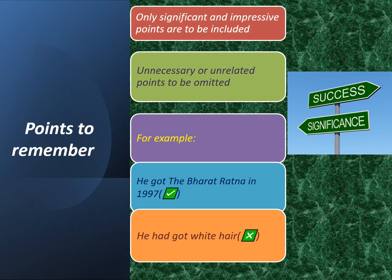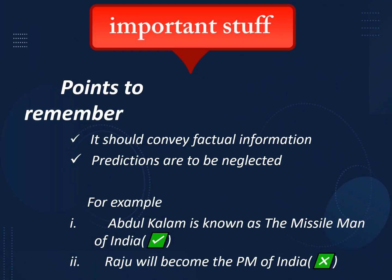For example, 'He got the Bharat Ratna in 1997' — yes, that is an important point. But 'He had white hair' — is that important? No, not at all. So we have to omit such unnecessary and unrelated points. Also, the profile should convey factual information, and predictions are to be neglected. For example, 'Abdul Kalam is known as the Missile Man of India' is a fact. But 'Raju will become the PM of India' is a prediction — we should not use such statements in a profile.